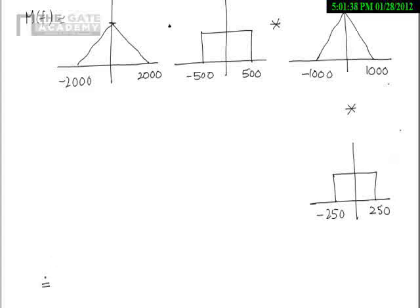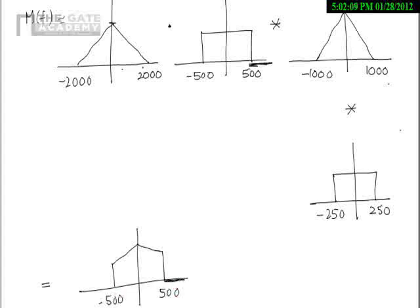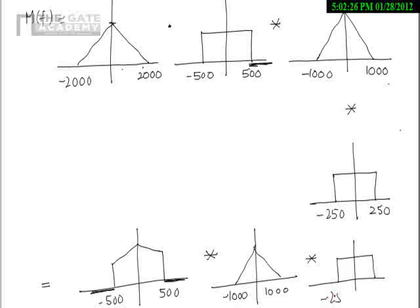We have the triangle multiplied by the rectangle. The triangle has support till 2000, but the rectangle is zero above 500, so when you multiply these two signals the resultant is only from minus 500 to 500 — beyond 500 the signal is zero. And then we apply convolution with a rectangle from minus 1000 to plus 1000, and then convolution with a triangle from minus 250 to 250.